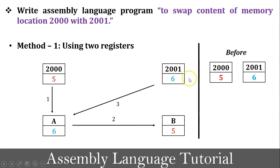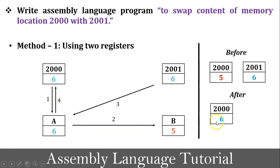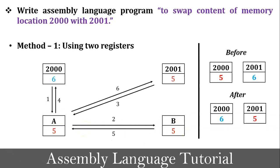In step 3, value 6 is copied into the accumulator from memory location 2001, so the accumulator now holds 6. In step 4, the accumulator content is copied into memory location 2000 — the previous value 5 is replaced with 6. In step 5, value 5 is copied into the accumulator from register B. In step 6, value 5 is copied into memory location 2001 from the accumulator, replacing 6 with 5. The values are now swapped; register B was used as a temporary register.